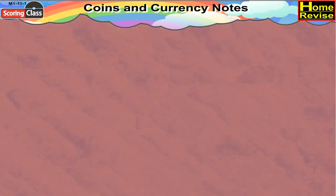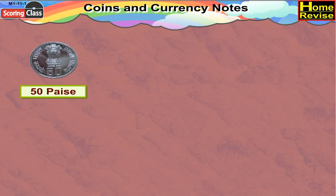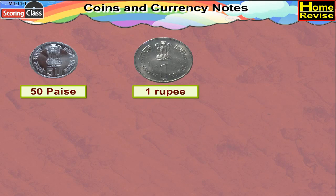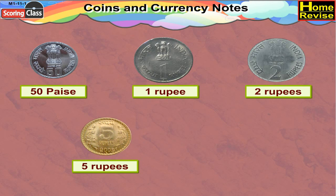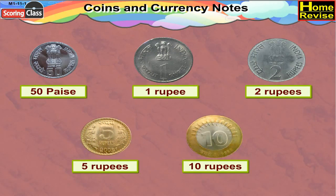Let us see different kinds of coins. This is a 50 Paisa coin. This is a 1 Rupee coin. That's a 2 Rupees coin. Here's a 5 Rupees coin, and that's the new one — a 10 Rupees coin.